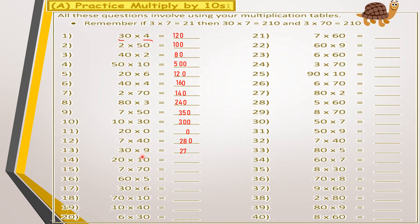For 3 multiplied by 90: 3 by 9 equals 27, drop down the zero, answer is 270. For 20 multiplied by 10: 2 by 1 equals 2, drop down the two zeros, answer is 200. For 7 multiplied by 70: 7 by 7 equals 49, drop down the zero, answer is 490. For 5 multiplied by 60: 5 by 6 equals 30, drop down the zero, answer is 300.